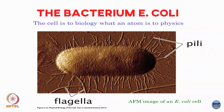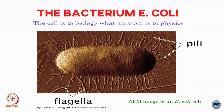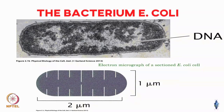Here is a single E. coli cell — this is an AFM image. You can see small hair-like things which are the pili, and long strands which are the flagella that the bacteria use to move around. Here is an electron micrograph of the same E. coli cell: typically it would be around 1 micron on one side and 2 microns on the other.